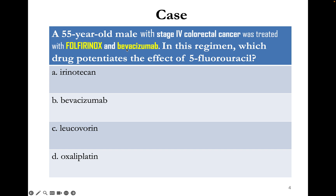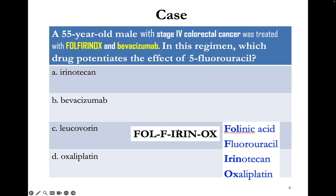Bevacizumab is not the answer because it is a targeted therapy with an entirely different mechanism of action — nothing to do with 5-FU's functioning. Let's break down FOLFIRINOX: it includes oxaliplatin, irinotecan, 5-fluorouracil, and folinic acid. So the answer is folinic acid, or leucovorin, given with 5-fluorouracil.